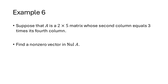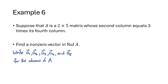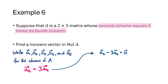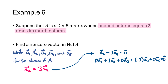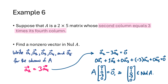For another abstract example: suppose we have a 2 by 5 matrix whose second column equals 3 times its fourth column. Name the columns a1 through a5; we're given a2 = 3a4. Rewriting: a2 - 3a4 = 0. Filling in the missing columns gives 0·a1 + 1·a2 + 0·a3 + (-3)·a4 + 0·a5 = 0, which is A times the vector (0, 1, 0, -3, 0). Since A times that non-zero vector equals the zero vector, that vector is in the null space of A.